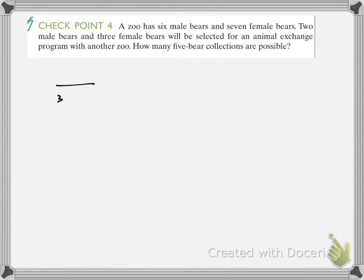So here's the idea: we're going to pick three female bears and two male bears — two separate categories. We'll first figure out how many ways to pick two male bears out of six. Order doesn't matter, so that would be 6C2.